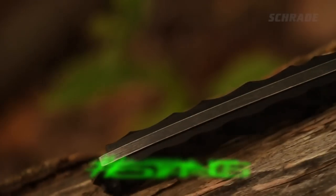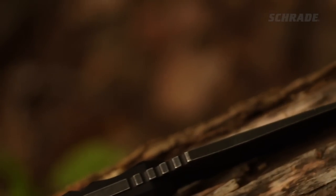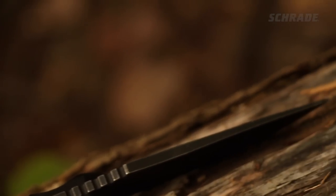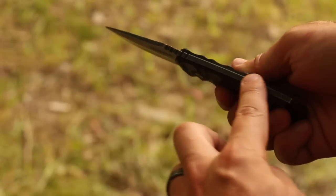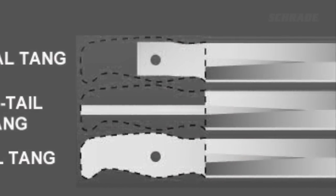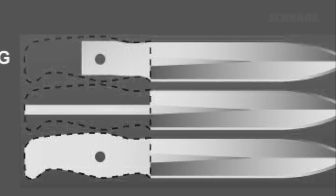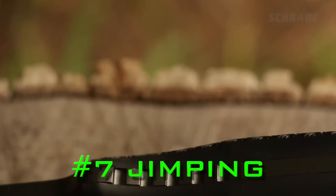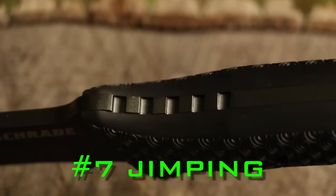Tang refers to the portion of the blade that extends into the handle. A full tang knife is made of a single long piece of metal running from the blade tip to the butt of the knife. In a partial tang knife, the blade metal runs only part way into the handle.